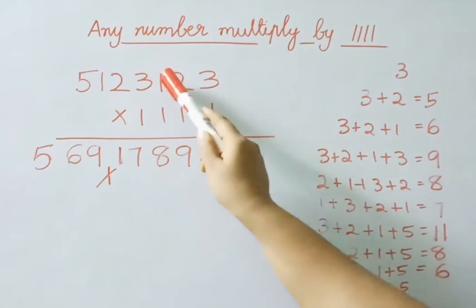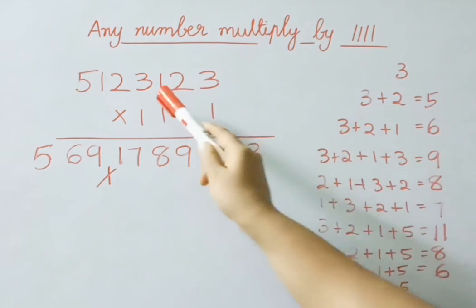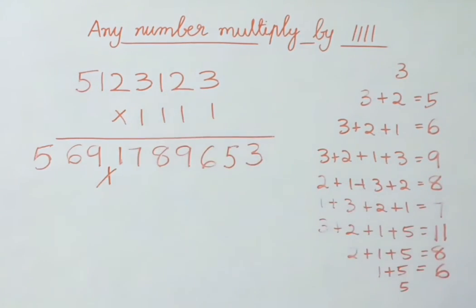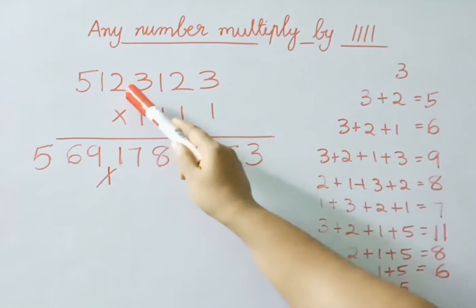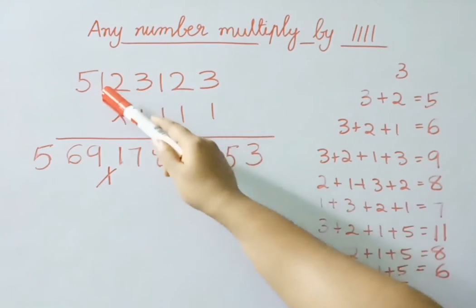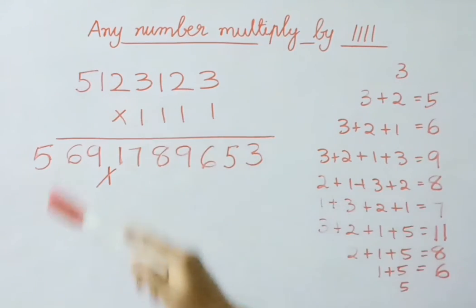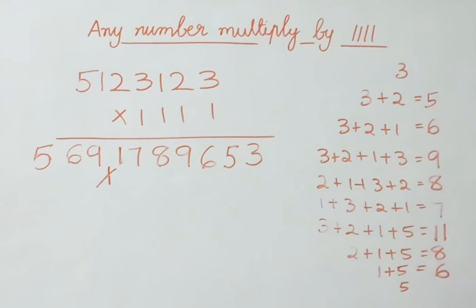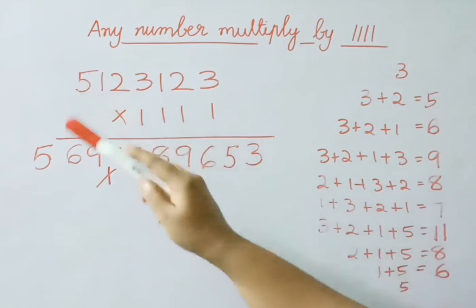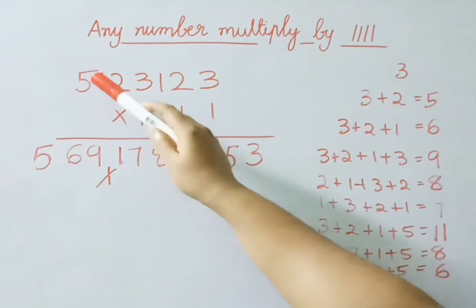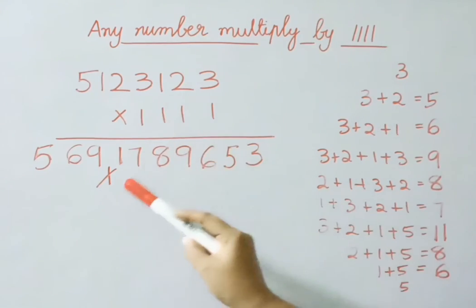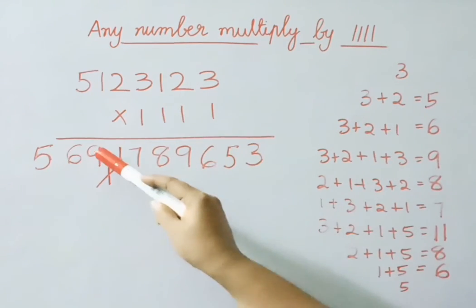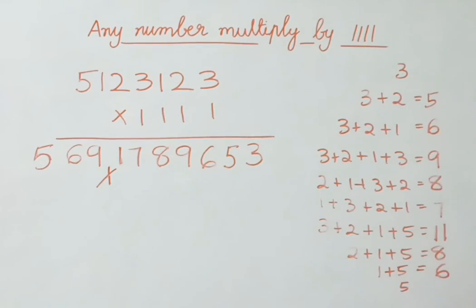Now leave these 3 digits and add those 4 digits: 3 plus 2 is 5, 5 plus 1 is 6, 6 plus 5 is 11. So write 1, carry 1. Now add the last 3 digits: 2 plus 1 is 3, 3 plus 5 is 8. With carry 1, you will get 9.